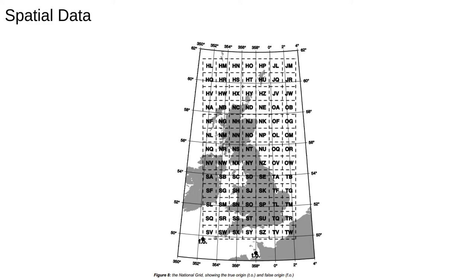Lots of other countries have their own coordinate systems for their own national data. There are historical reasons, but it also makes sense — countries want to use a map projection that doesn't distort their borders, and they don't really care what happens outside. So, converting British National Grid coordinates to latitude and longitude is tricky, but Python comes to the rescue once again.